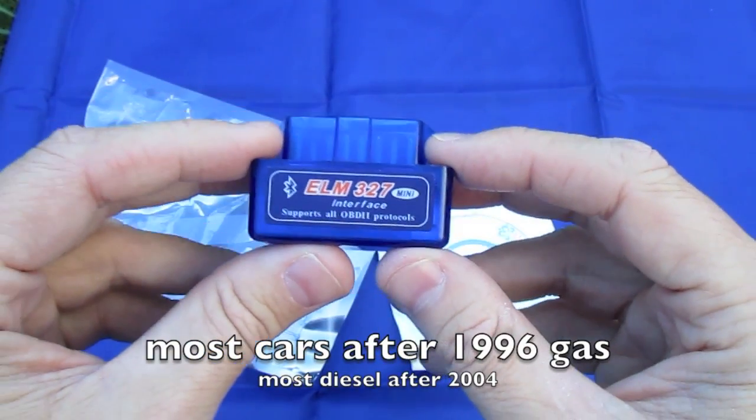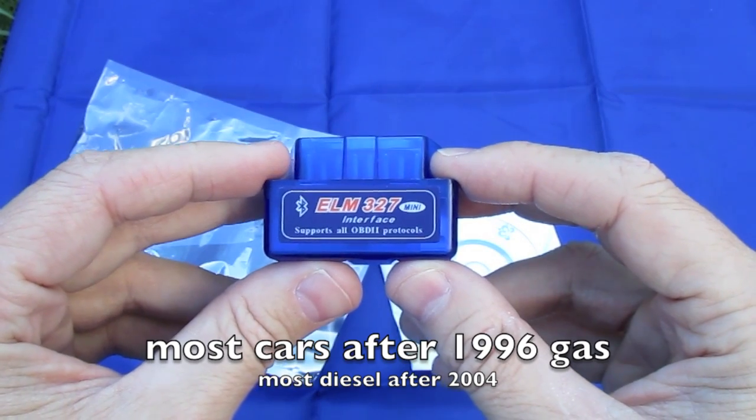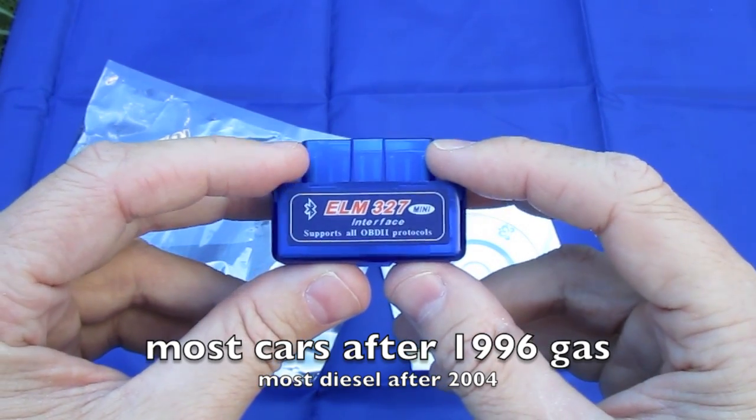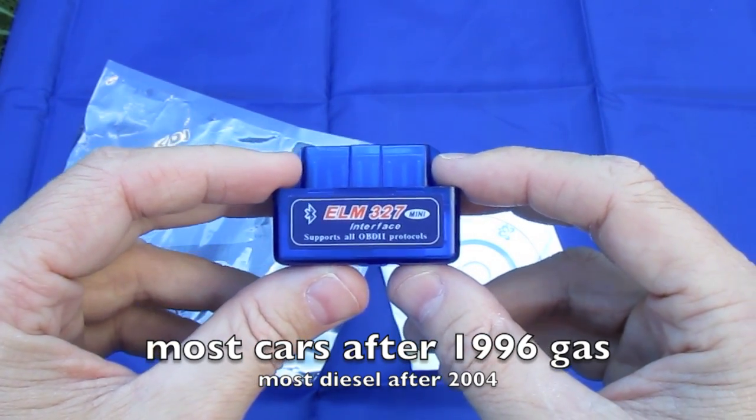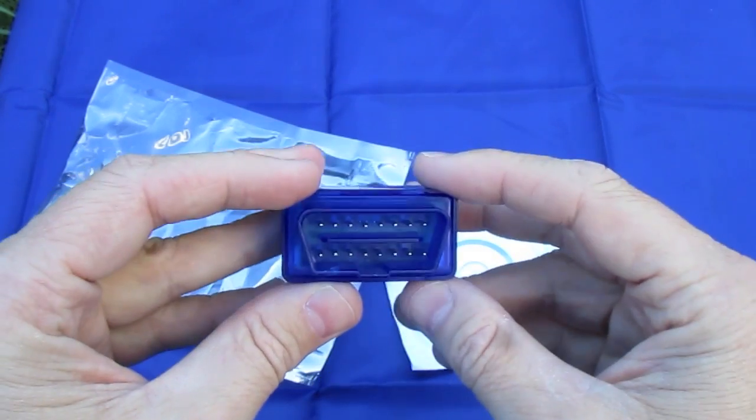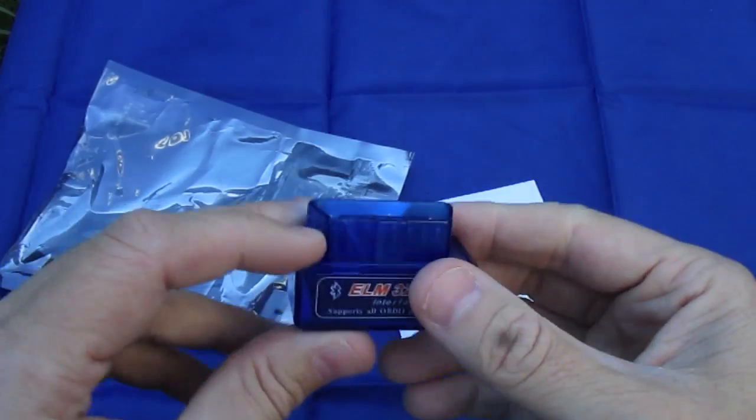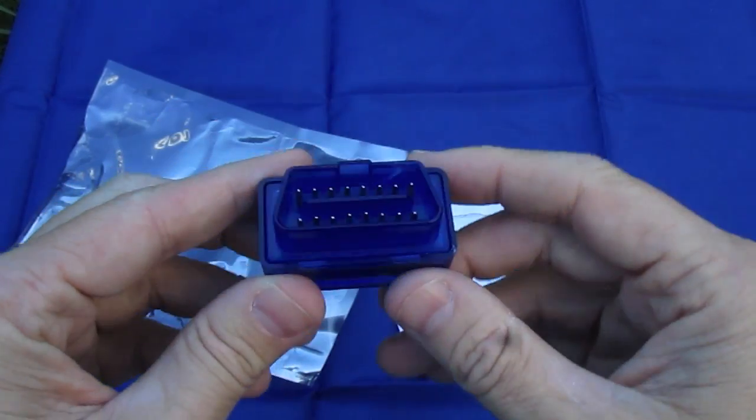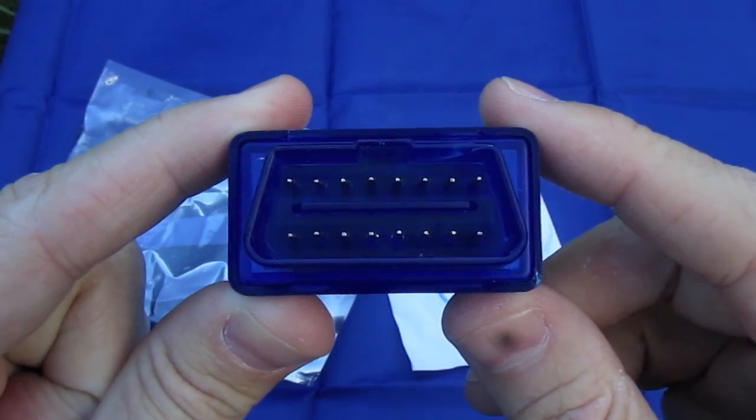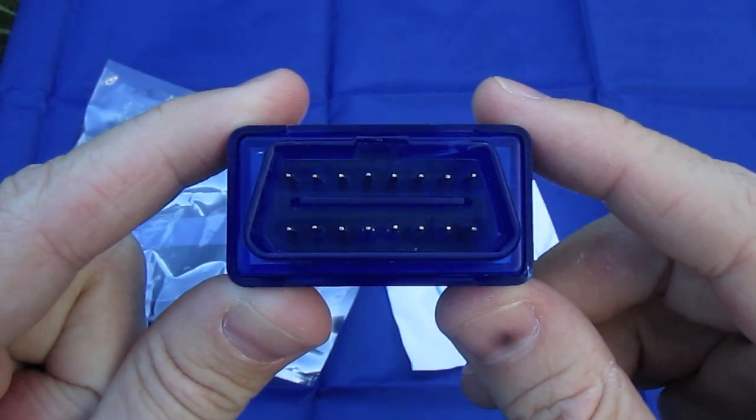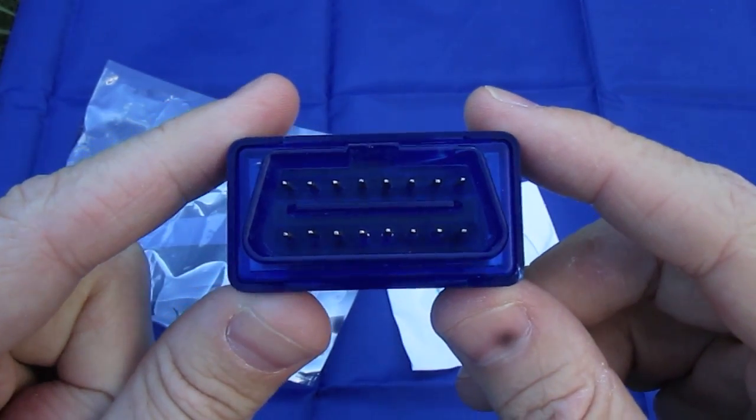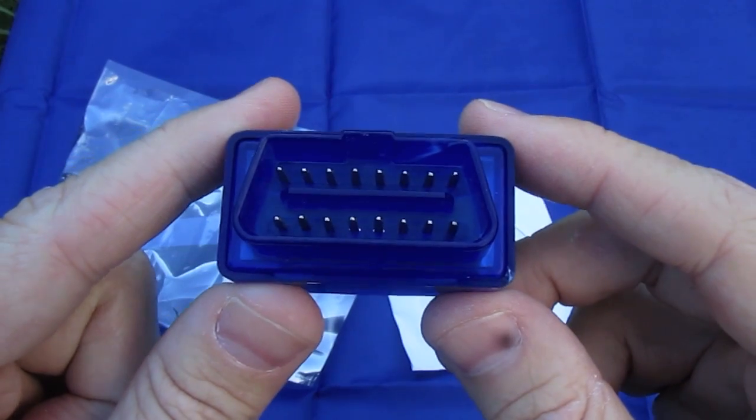So there's a certain model year of car, I want to say it's before 2000, but anyway all the newer vehicles this will support. You'll see under here, it's the OBD2 connector, all those pins. And this port is underneath the dash of your vehicle, usually under the steering wheel in that area.